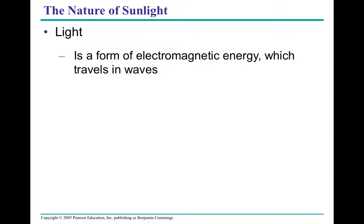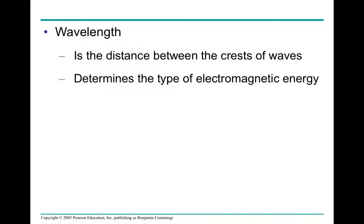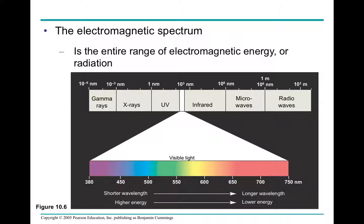This section is not required for this week's questions but may appear on a test. Light is a form of electromagnetic energy that travels in waves. A wavelength is the distance between the crests of the waves and determines the type of electromagnetic energy. Our electromagnetic spectrum is the entire range of electromagnetic energy, from gamma rays to radio waves. Visible light is a very small part of that spectrum, and within it we see all sorts of different colors. Purple, blues, and greens have shorter wavelengths, while reds, oranges, and yellows have longer wavelengths.